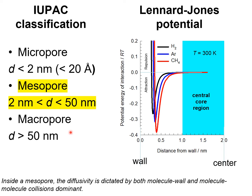Today we discuss diffusivity in mesoporous channels. According to the IUPAC classification of pore sizes, micropores have diameters less than 2 nanometers, mesopores have diameters ranging from 2 nanometers to 50 nanometers, and macropores have diameters larger than 50 nanometers.